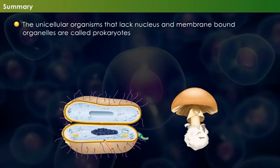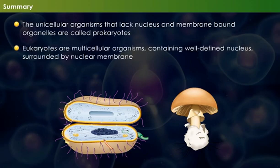Summary: The unicellular organisms which lack nucleus and membrane-bound organelles are called prokaryotes. Bacteria and blue-green algae are examples of prokaryotes. Eukaryotes are multicellular organisms containing a well-defined nucleus surrounded by a nuclear membrane. Protozoa, algae and fungi are examples of eukaryotes.